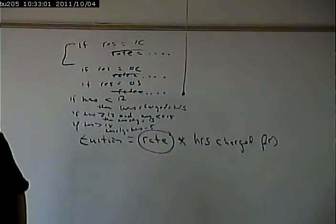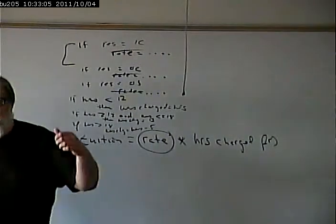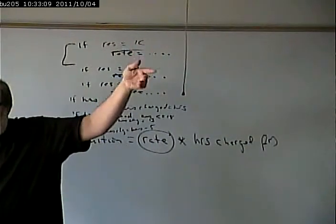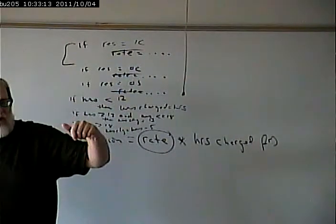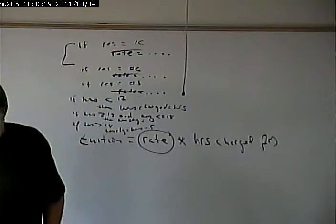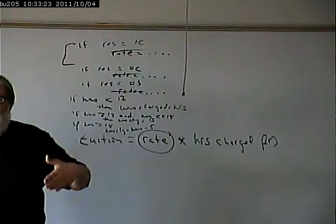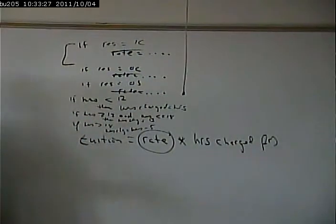Likewise, a lot of folks had the rate repeated over and over and over again. They had 103.05 times hours. 103.05 times 13. 103.05 times whatever. Well, what if that 103.05 changes? Again, those three places that you'd have to change it. So, think of this and look at your code and see how far you deviate from that.